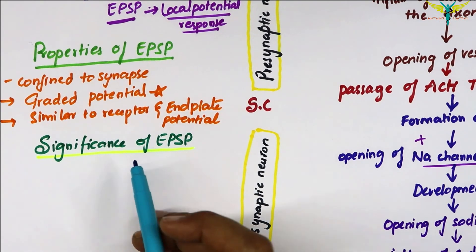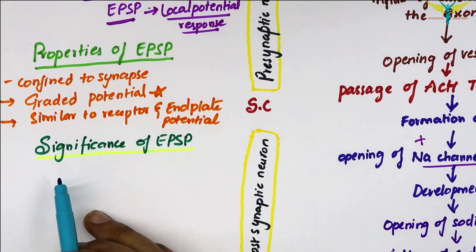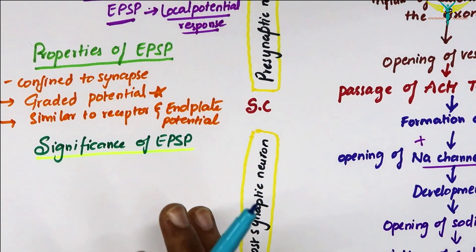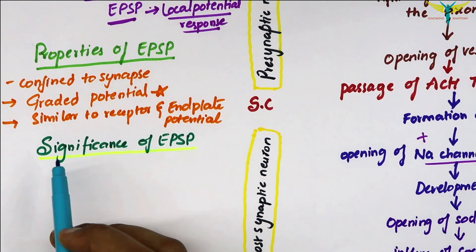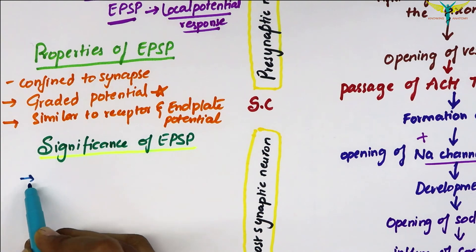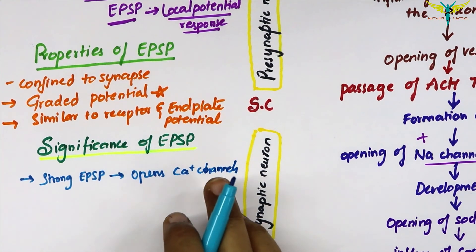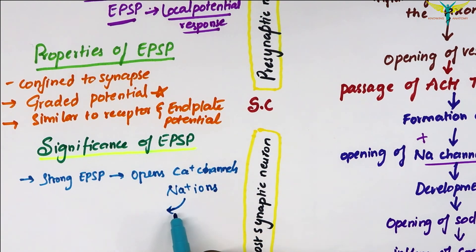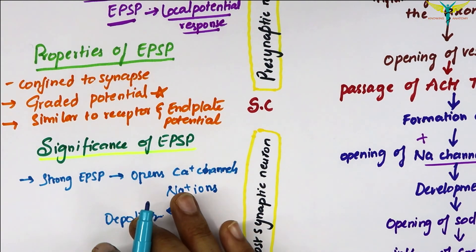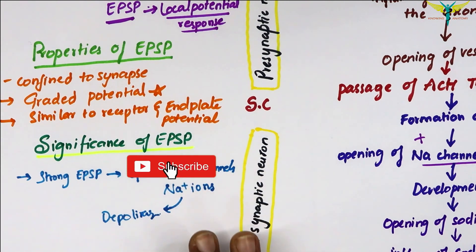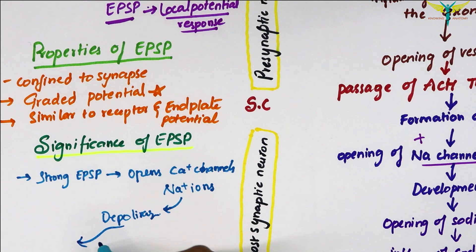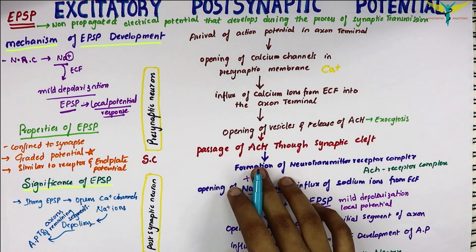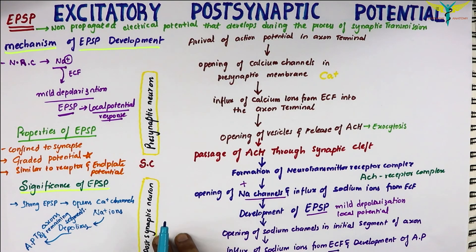Now let's learn about the significance of the EPSP. The EPSP is not transmitted into the axon of the post-synaptic neuron; however, it causes the development of the action potential in the axon. When the EPSP is strong enough, it causes the opening of the voltage-gated sodium channels in the initial segment of the axon. Due to the entrance of sodium ions, depolarization occurs in the initial segment, and thus the action potential is developed. From here, the action potential spreads to the other segments of the axon.